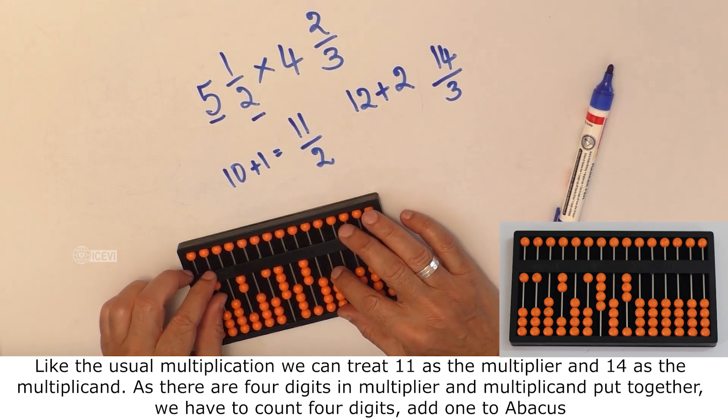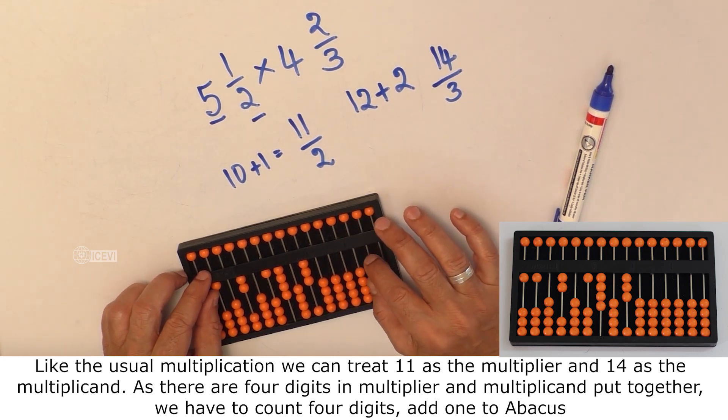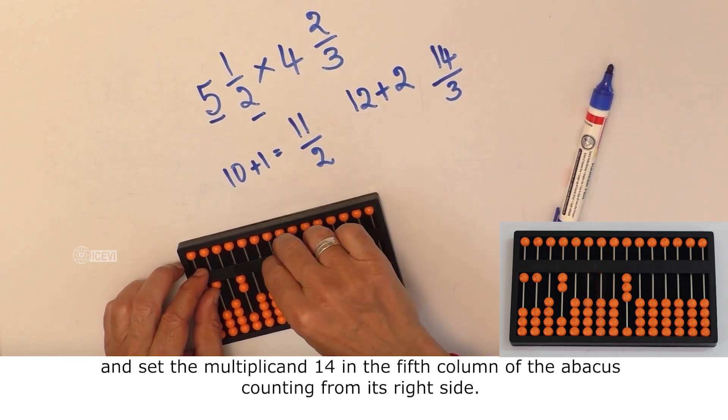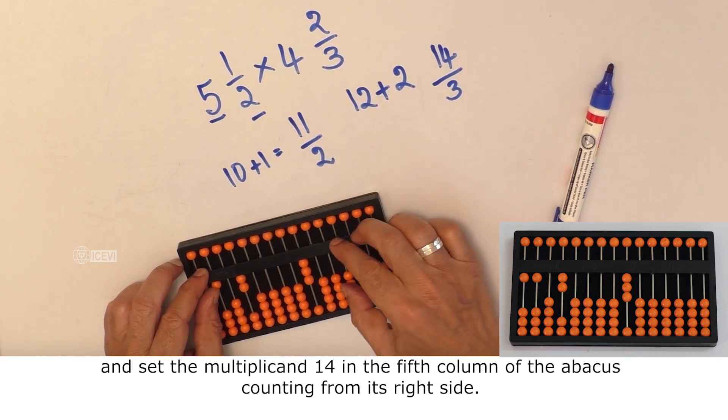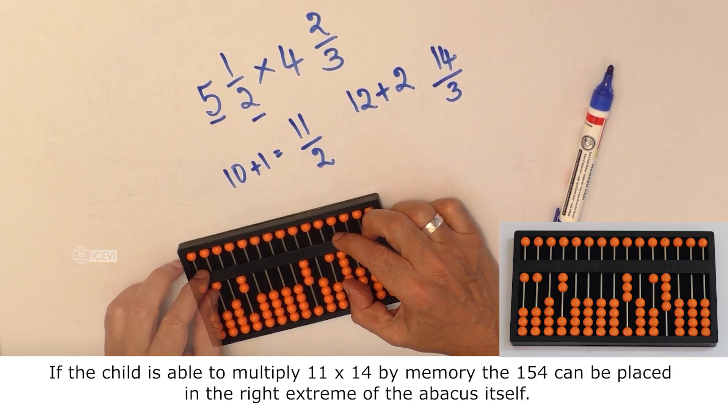As there are 4 digits in multiplier and multiplicand put together, we have to count 4 digits, add 1 to the abacus and set the multiplicand 14 in the 5th column from the right side of the abacus.